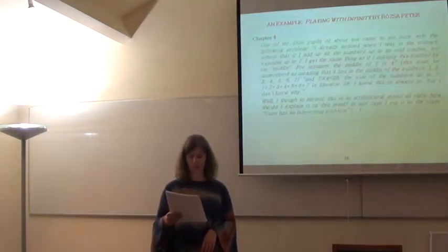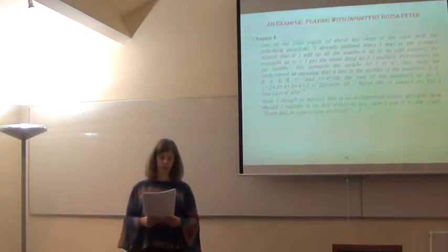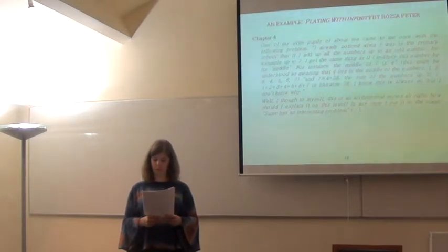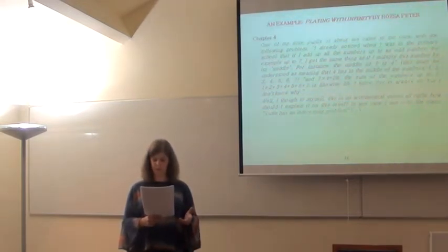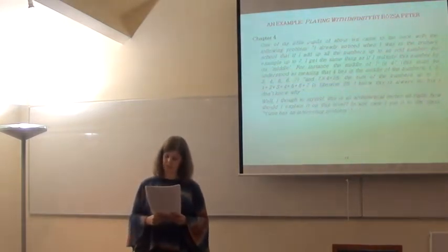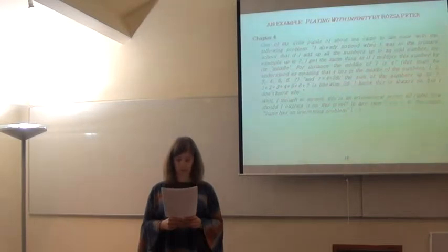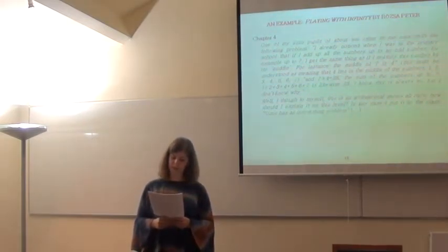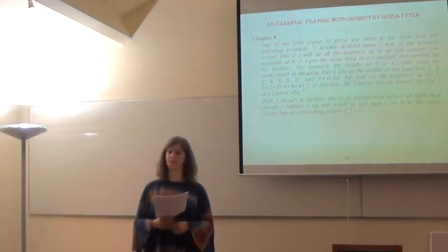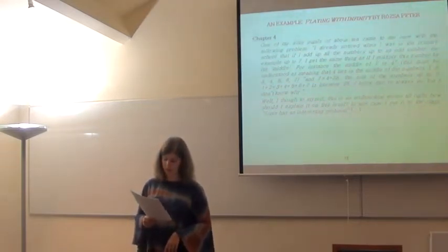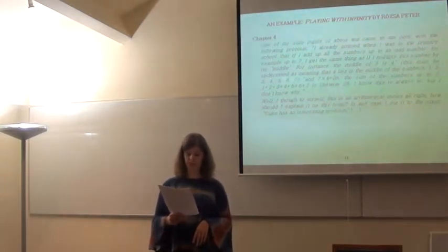So the story starts with a question by a curious youngster. One of my pupils came to me once with the following problem: I already noticed when I was in the primary school that if I add up all the numbers up to an odd number, for example after seven, I get the same thing as if I multiply this number by its middle. For instance, the middle of seven is four, and seven times four is twenty-eight. The sum of the numbers after seven is likewise twenty-eight. I know this is always so, but I don't know why. Well, I thought to myself, this is an arithmetical series, alright. How should I explain it on this level? In any case, I put it to the class: Susie has an interesting problem. And the following two chapters present a long and complex research process based on this problem.